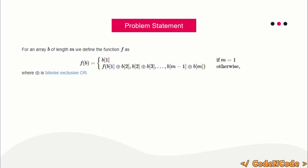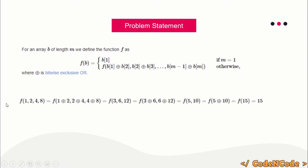The problem statement says you are given an array b of size m, and f(b) is a function defined on the array. If you are evaluating f on an array having four elements, it will take XOR of adjacent elements. So XOR of (1,2), XOR of (2,3), XOR of (4,8) — in one step it reduces the size of the array by one. We keep performing the operation until we have only one element, and f(b) is that one element. So f of [1, 2, 4, 8] equals 18.